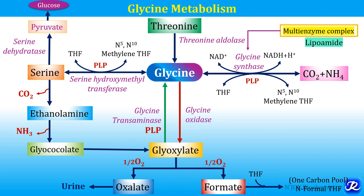So this is glycine metabolism. Glycine is synthesized from serine, threonine, carbon dioxide and ammonia, and glyoxylate. It can be degraded to serine, carbon dioxide and ammonia, and glyoxylate. Glyoxylate is further converted to oxalate and formate. Formate is involved in the one carbon pool and oxalate is excreted in the urine.